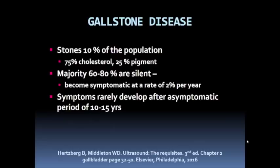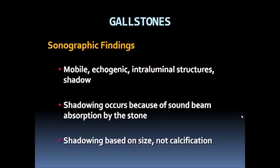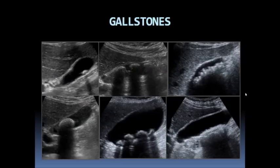Gallstone disease: stones are present in 10% of the population; 75% are cholesterol and 25% are pigment stones. The majority of patients with gallstones are silent, up to 80%, and they become symptomatic at a rate of 2% per year. Symptoms rarely develop after an asymptomatic period of 10 to 15 years. Gallstones are mobile, echogenic, intraluminal structures that shadow. Shadowing occurs because of sound beam absorption by the stone, and it is based on the size of the stone, not its calcification or composition. Very small stones, 3 millimeters or smaller, may not show shadowing.